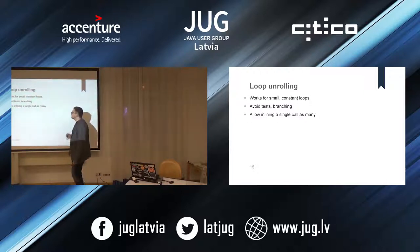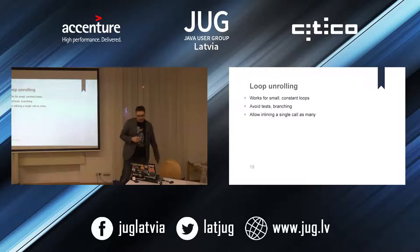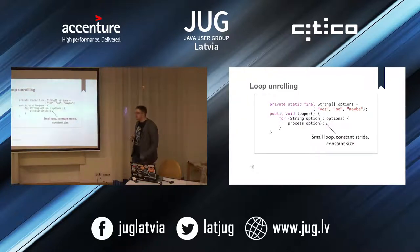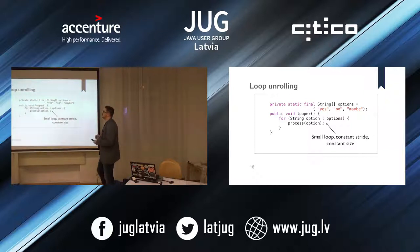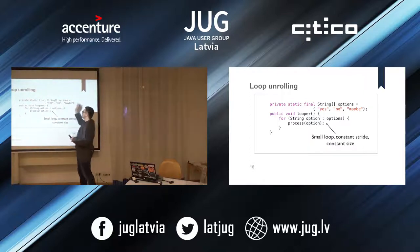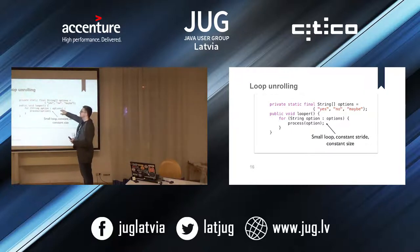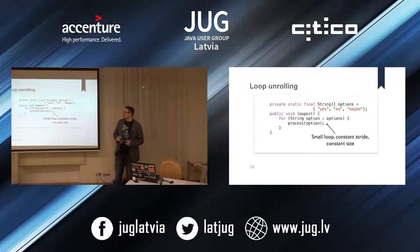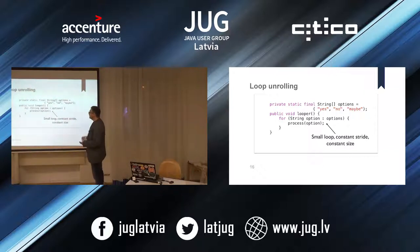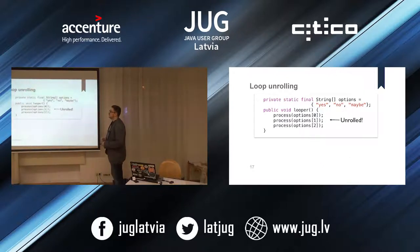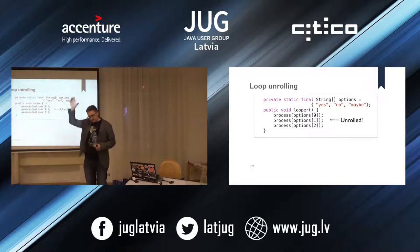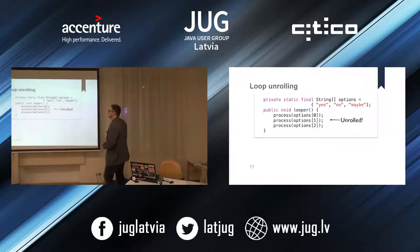Another thing that may happen is loop unrolling. If you have a loop that is known to iterate over a fixed, small number of options - like yes, no, maybe - and JIT sees this loop always goes over three options, instead of keeping the loop it will just replace it with the three operations inline. This is more efficient because you just do it once without the loop overhead.